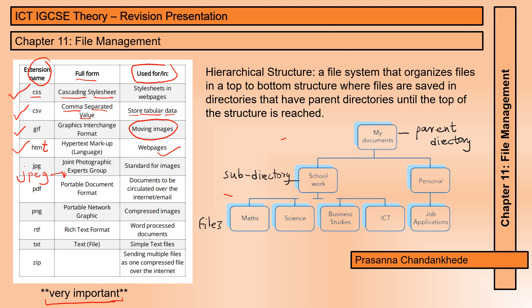JPG stands for Joint Photographic Experts Group — sometimes written as JPEG. It's used for images. PDF is Portable Document Format, used for documents to be circulated over the internet or through email. PNG stands for Portable Network Graphic and is used for compressed images, often for background images in web pages.